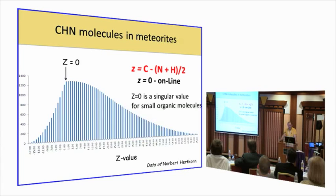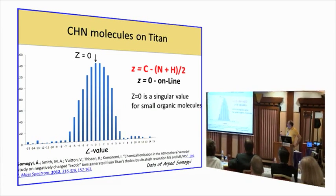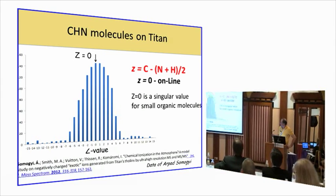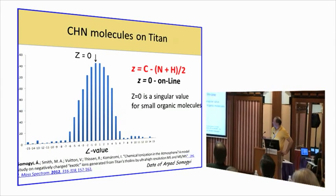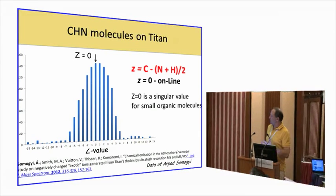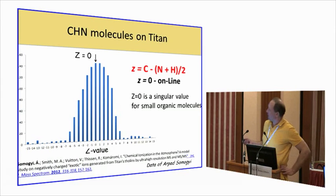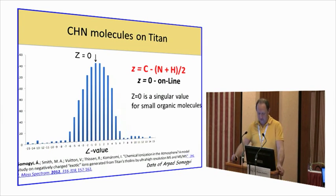If you look at the distribution of organic molecules found in meteorites, this is data from a collaborator from Munich, you will see that Z equal to zero is a singular value. That's the value to which the distribution tends. There is another dataset coming from Hungarians, the Hungarian connection, Art Patz, Samod, he's now at the University of Arizona. This is Titan, which is a satellite of Saturn. They simulated its atmosphere and created these molecules containing CHON, and Z equal to zero corresponds to the maximum distribution.